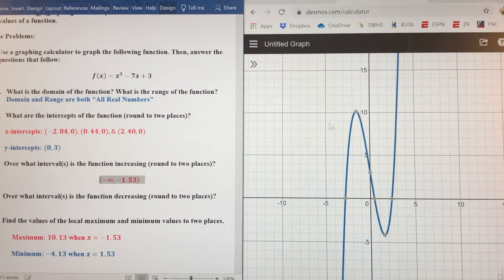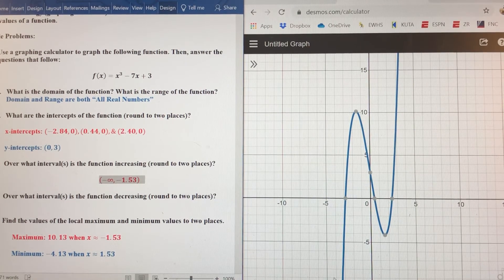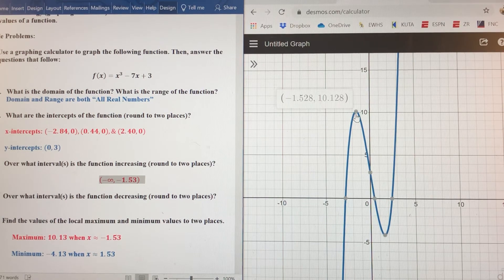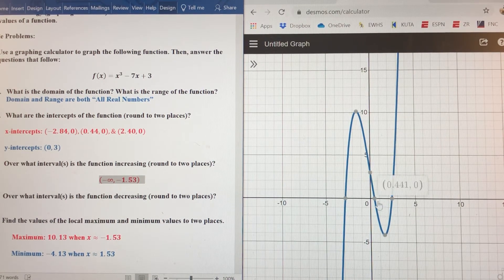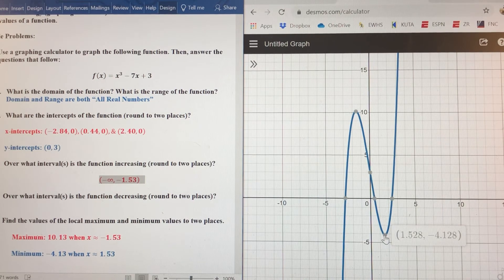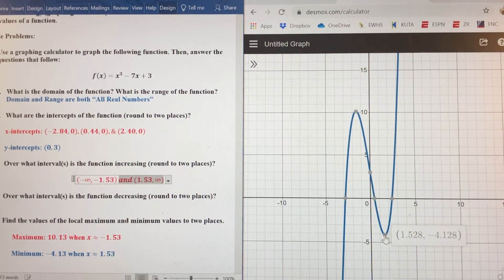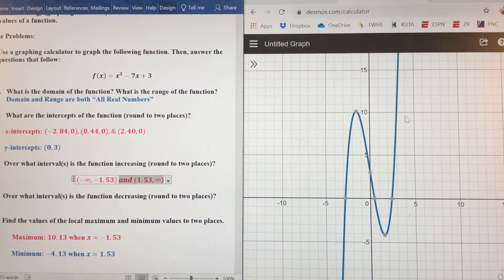So my first increasing interval is this part from negative infinity all the way to when x is negative 1.53. Then I'm decreasing for this next little interval. And then I start increasing again at 1.53. And that goes all the way to positive infinity.